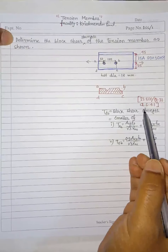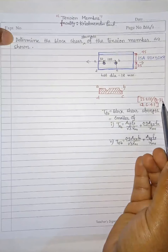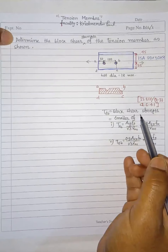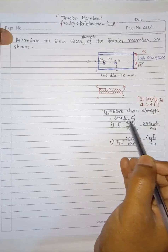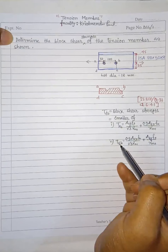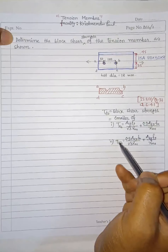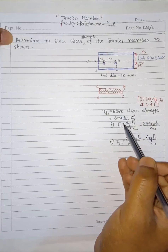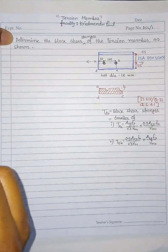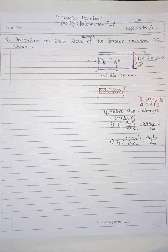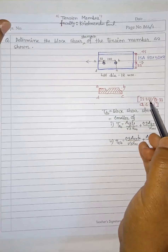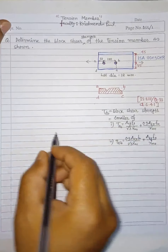Referring to IS 800, page 33, clause 6.4.1, the block shear strength is described as the smaller of two values, Tdb1 and Tdb2. You find both values and whichever is smaller governs as the block shear strength of this angle section.